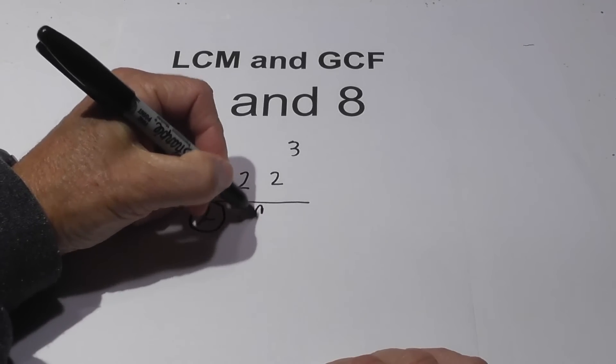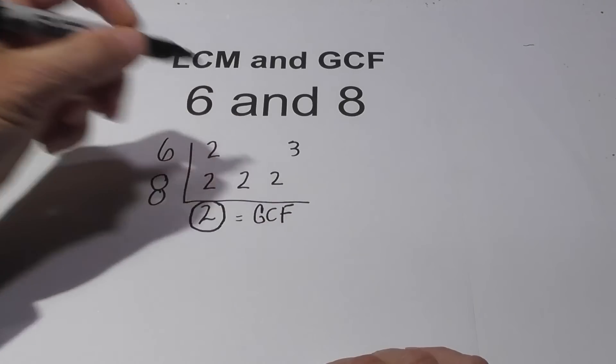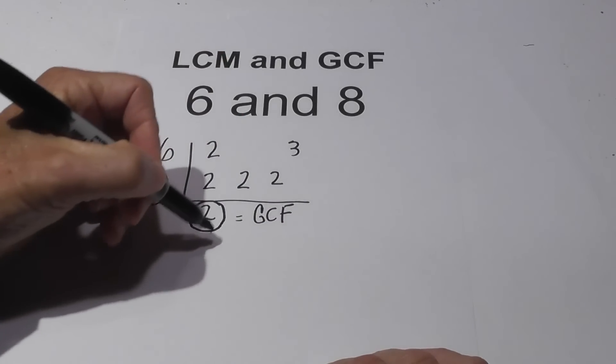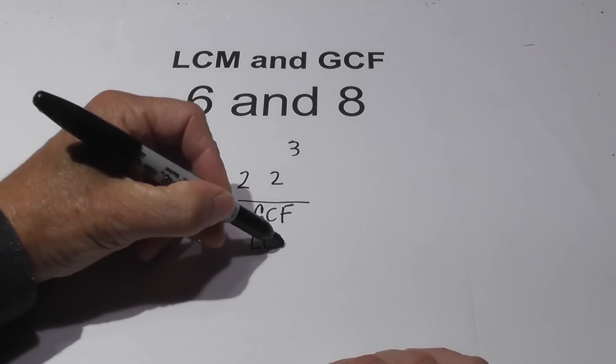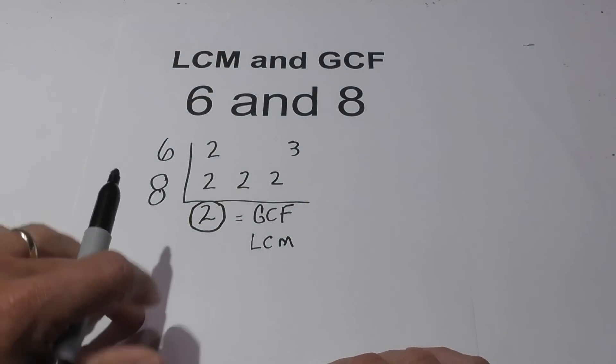So, in summary, the GCF of 6 and 8 is 2 and the LCM is 24.